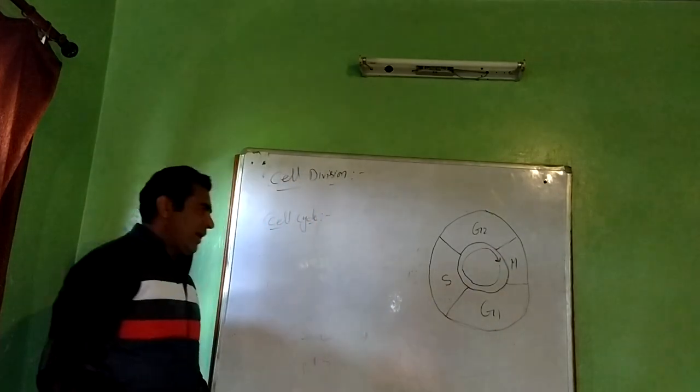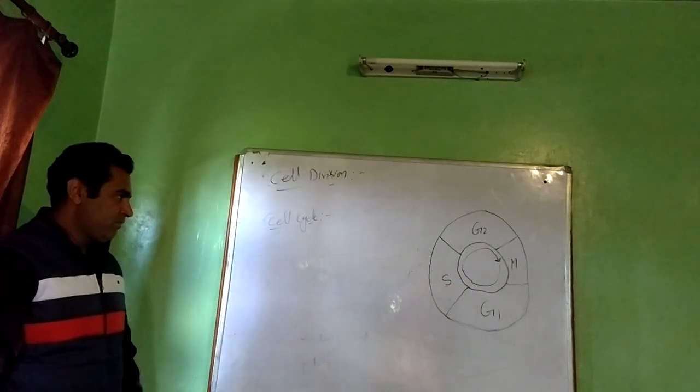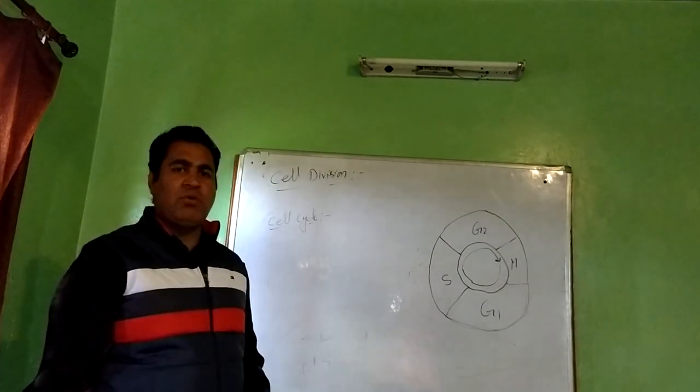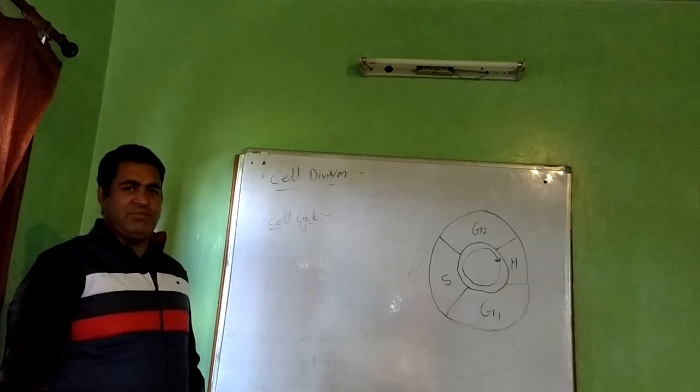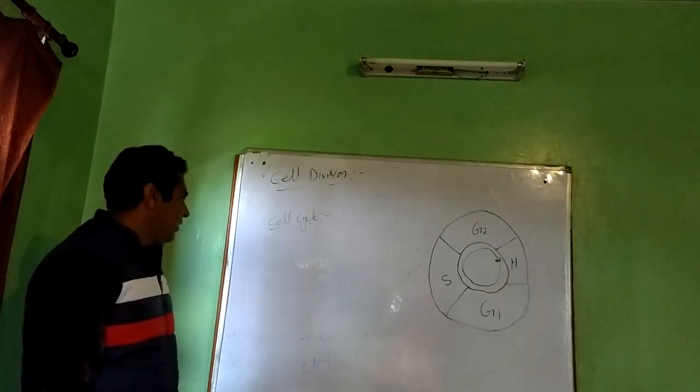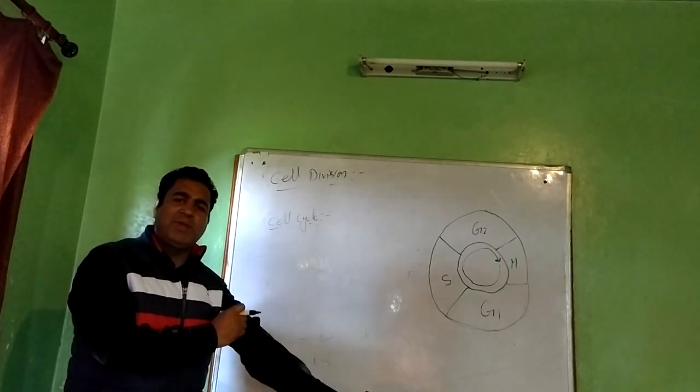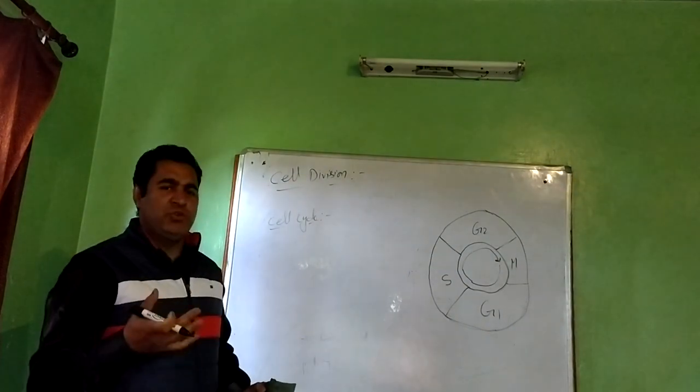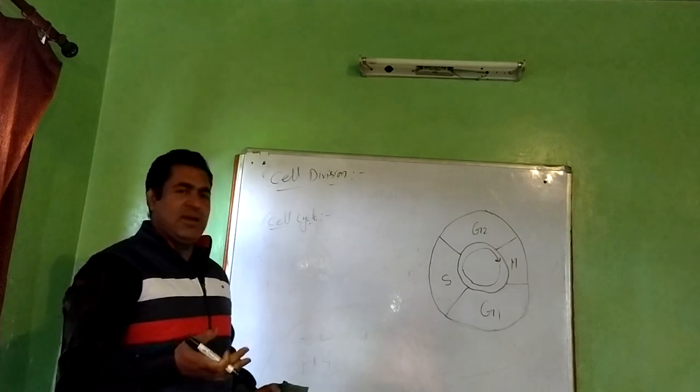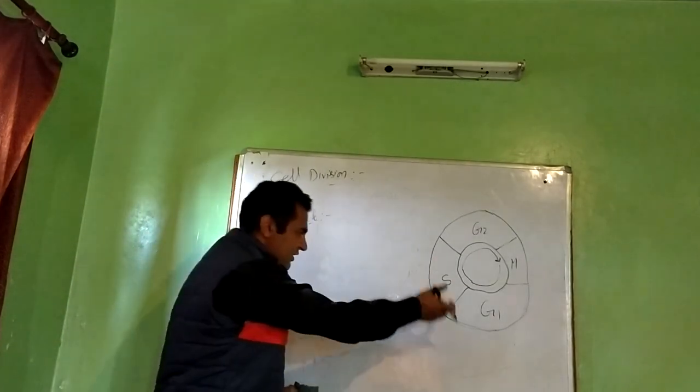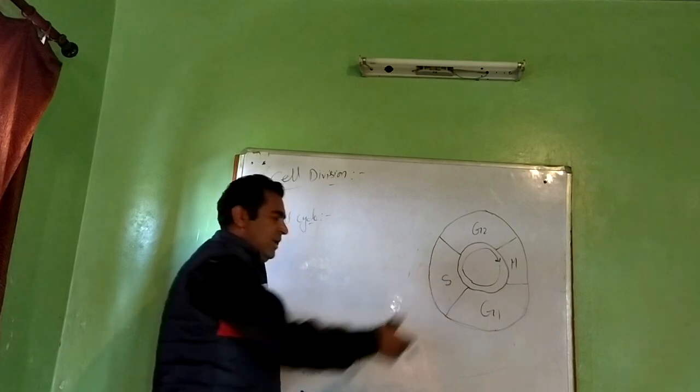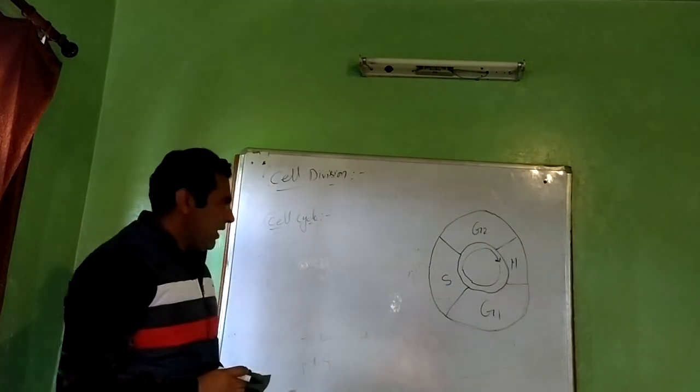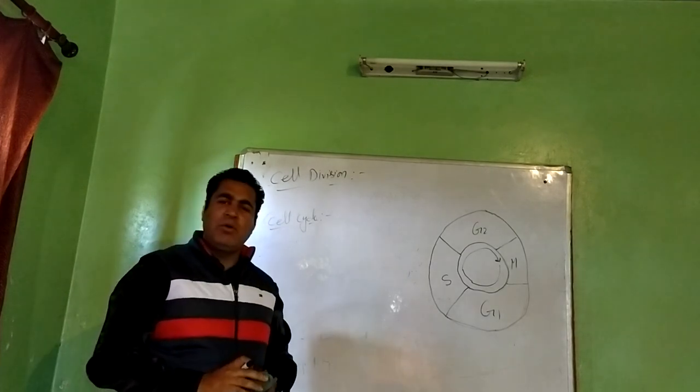Next question: how did we come to know about these stages? Currently we know there are different stages: G1, S, G2, and then M phase, which is also divided into different stages. But how did we come to know about these stages? There is one experiment called the pulse-chase experiment.